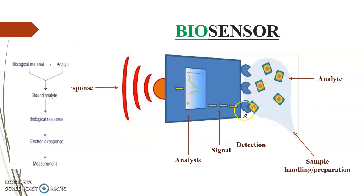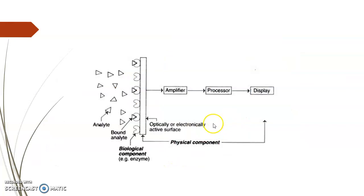To summarize the signal flow: the analyte binds to the bioreceptor, forming a bound analyte. This creates a biological response, which is then converted to an electronic response, amplified, processed, and displayed as a final measurement.